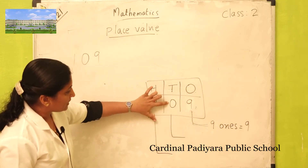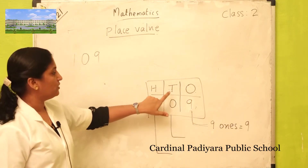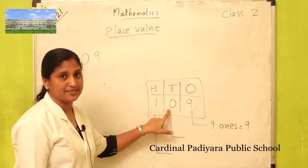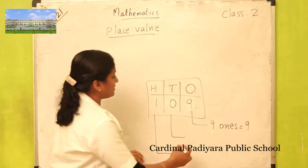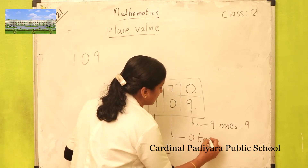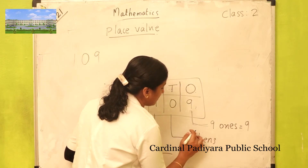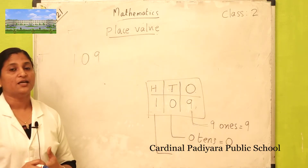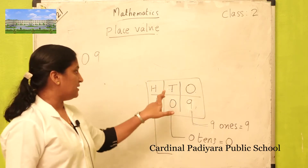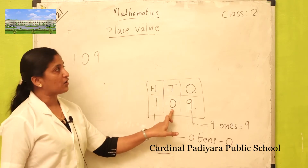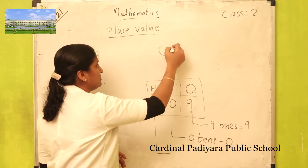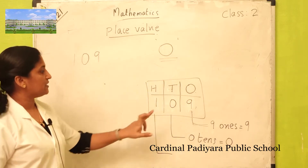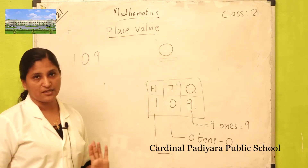Look at this number zero. Zero is in which place? Tens place. How many tens? Zero tens. Zero tens is zero. Remember: the place value of zero is always zero.